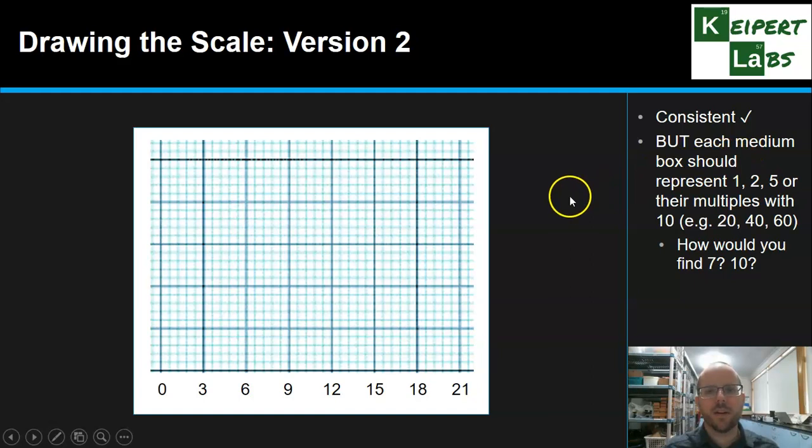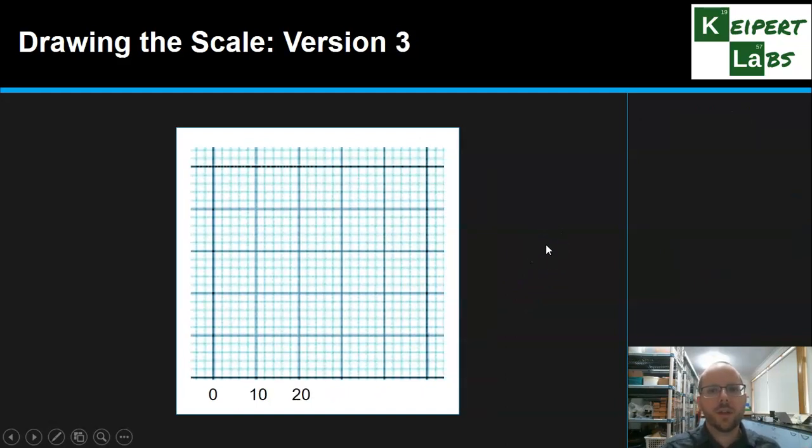Each medium box should represent the numbers 1, 2, or 5, or their multiples with 10. That is by far the easiest way for you to be able to get each little box counting for a meaningful number that allows you to work it out. So then you're able to actually work out, where will I find 7? Where will I find 10? Where will I find 14? Based on that scale.